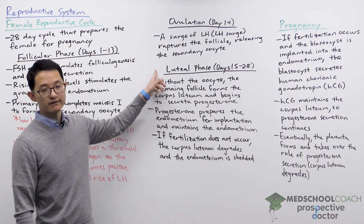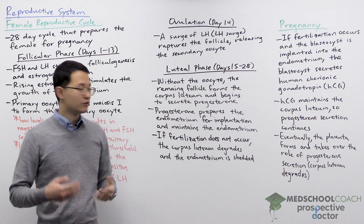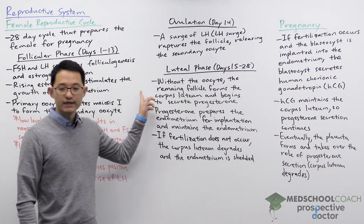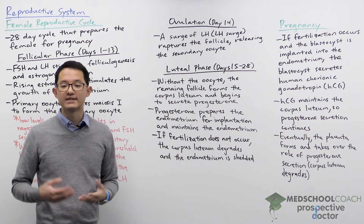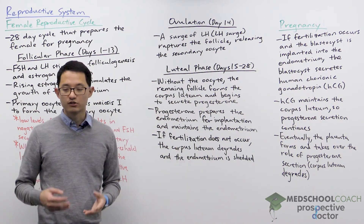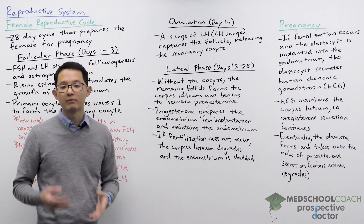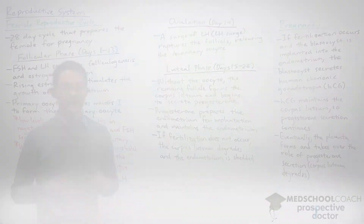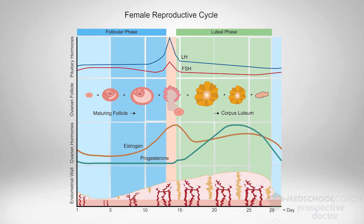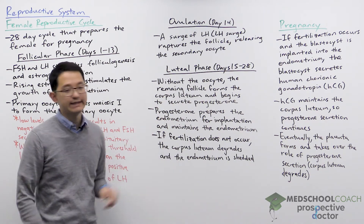The remaining days of the menstrual cycle, days 15 to 28, are called the luteal phase. It is named because the remaining follicle, now that the oocyte is no longer present, forms what is called the corpus luteum. The corpus luteum secretes progesterone, which has an important role in further preparing the endometrium for implantation by the blastocyst. You can see in this diagram how the endometrium becomes thicker and more vascularized, and progesterone is also important for maintaining the endometrium.